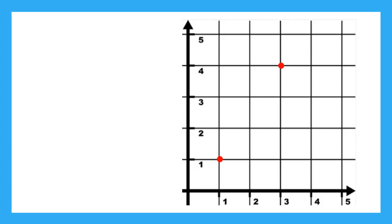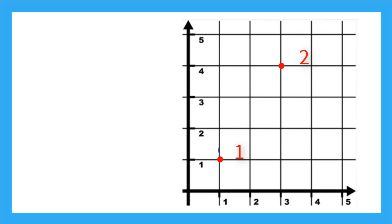Now let's find the rise and the run between these two points. Remember, we always start with the smallest x-coordinate, so I'll call this point 1 and this point 2, and we'll travel up to find point 2. To find the distance, I'm going to find my rise — the difference in my y-coordinates — so I go up on the y-axis until I meet the same y-coordinate as point 2. This is my rise. Then starting at x-coordinate 1, I travel over to point 2 — this is my run.